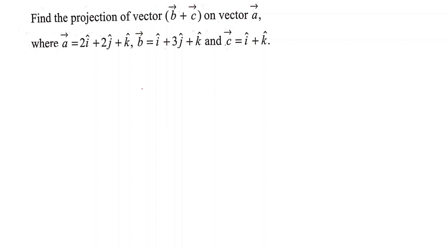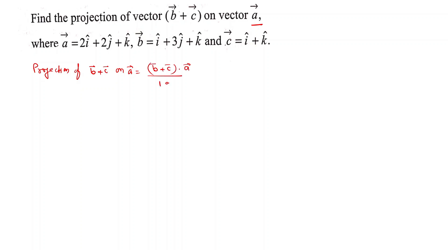Find the projection of vector b plus c on vector a. The projection of b plus c on vector a is equal to (b plus c) dot a vector, divided by the magnitude of vector a.